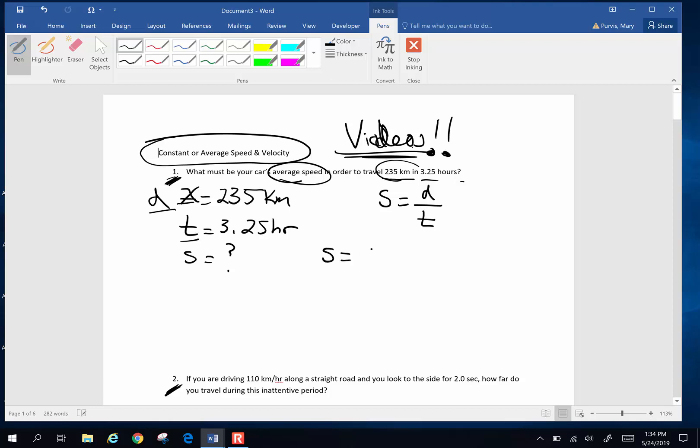Time is 3.25 hours and we're looking for average speed. Speed is what we're looking for. Well, we have one equation for speed: speed is change in distance divided by time. So speed is going to be 235 kilometers divided by 3.25 hours. I'm going to pick up my calculator. 235 divided by 3.25, I get 72.3.